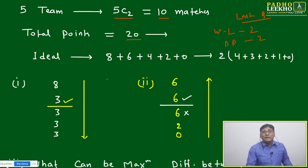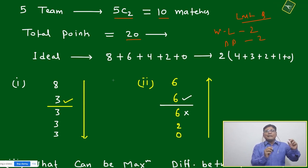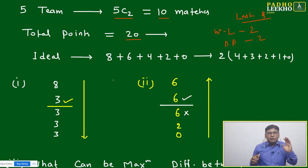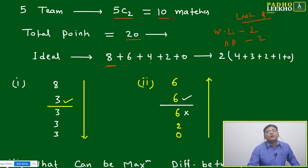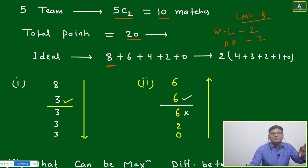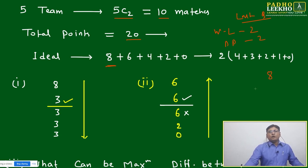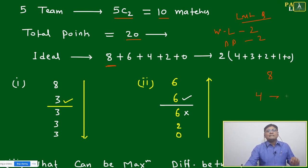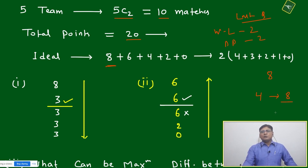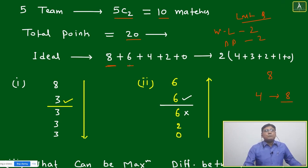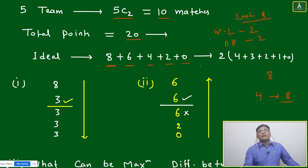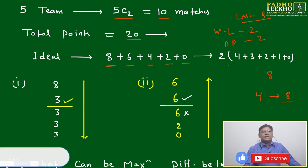The condition here is very strict: none of the teams can go beyond eight points, because any team plays four matches and can get a maximum of eight points only if they win all four. This is the key constraint. If one team is getting eight points, the next team cannot get more than six, the next more than four, the next more than two, and the last cannot get more than zero. This is the ideal distribution.